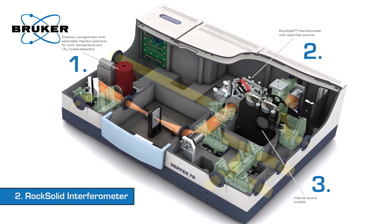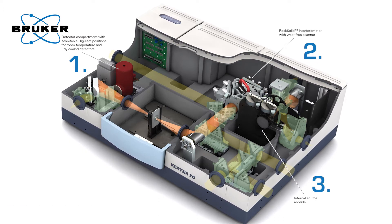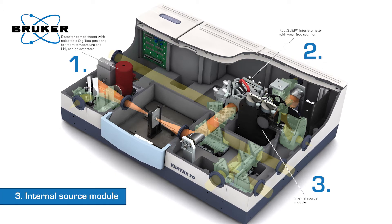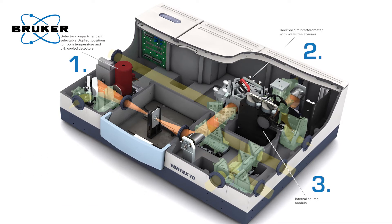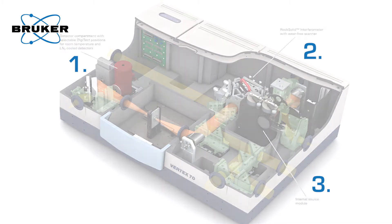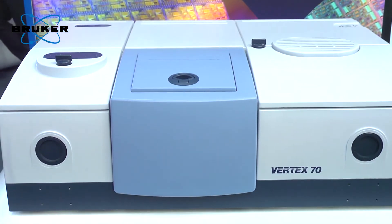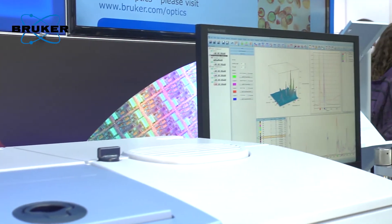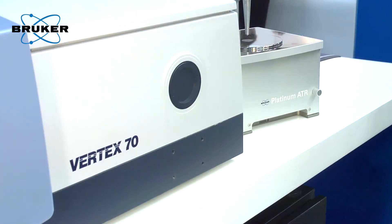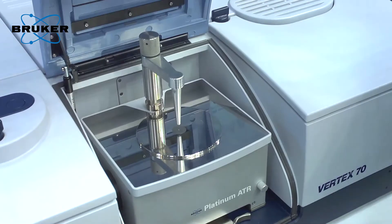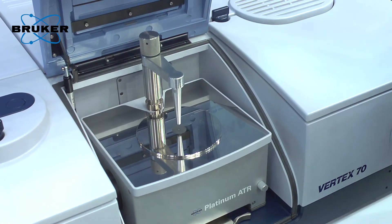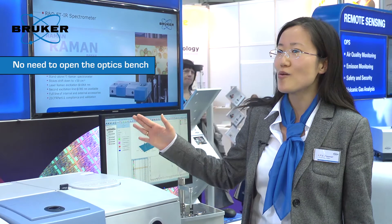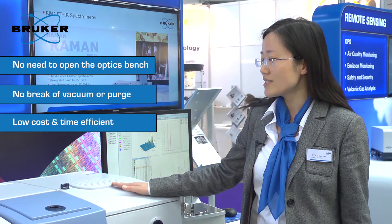The exchange of IR source, beam splitter, and detector is very easy and the software controls everything automatically. But to cover the whole range to the far IR, you still have to manually change the beam splitter, which means opening the optics bench and breaking the purge or vacuum.